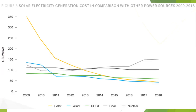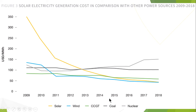This figure shows the solar electricity generation cost comparison with other power sources from 2009 to 2018. It can be seen that the cost of solar is significantly reducing compared to other energy sources like wind, coal, and new nuclear.